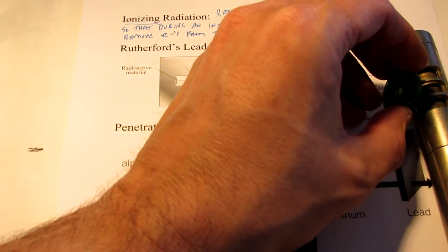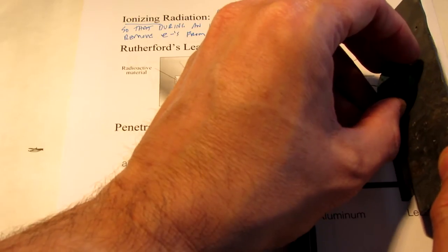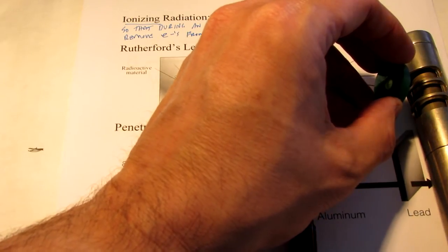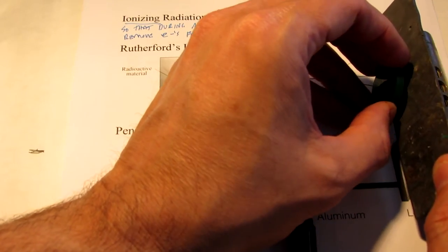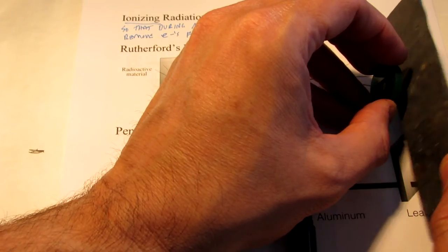But now let me replace that piece of paper with a piece of lead, and you can see that lead does a really good job at stopping just about all the beta particles. So beta can be stopped by a relatively thin piece of lead.